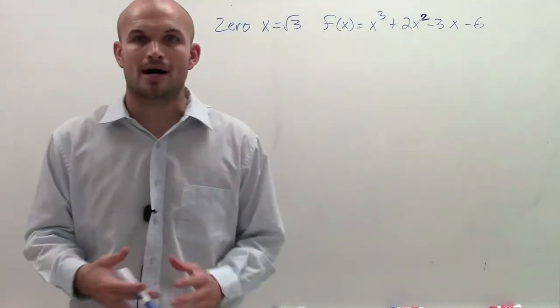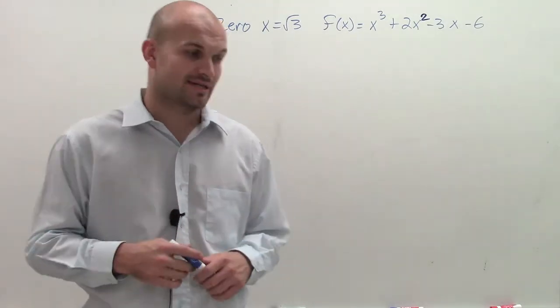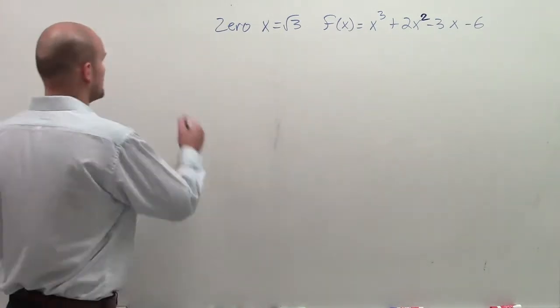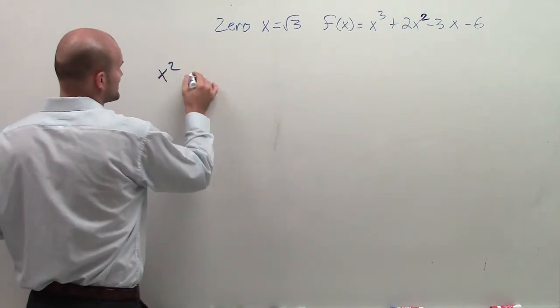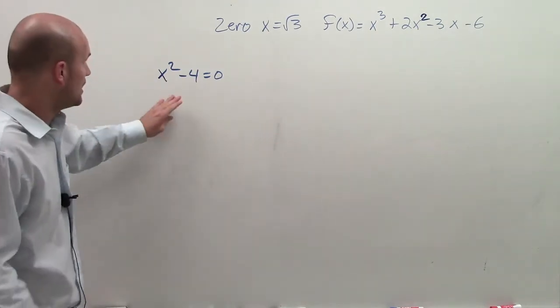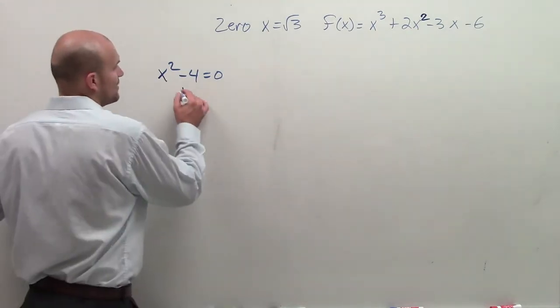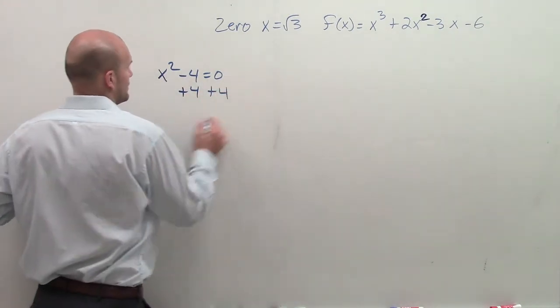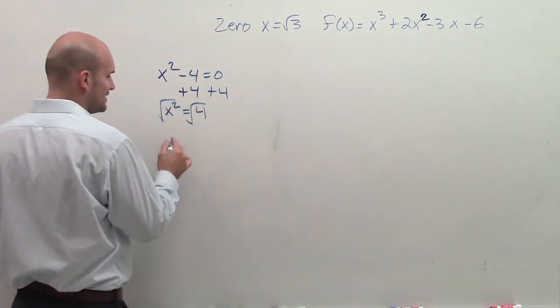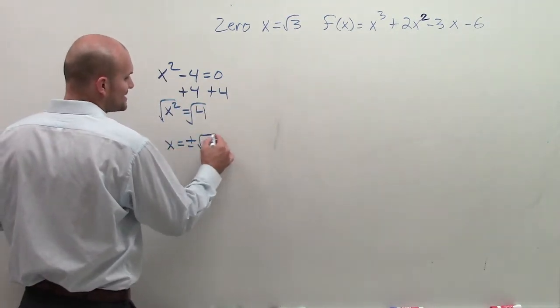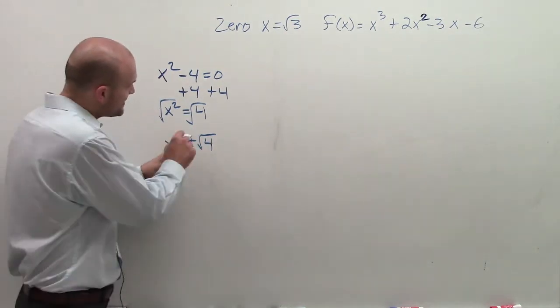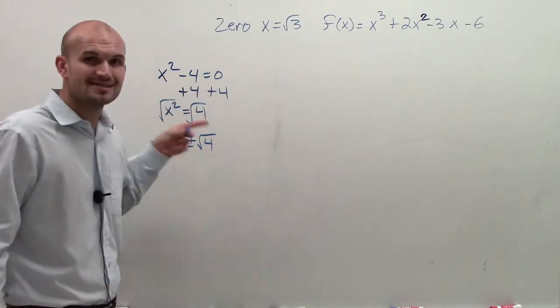To solve this problem, we've got to remember what exactly the zeros are going to tell us. Let me give you a hint to forward on this problem. Let's say I wanted to solve the zeros for this problem right here, something pretty simple. We can use the square root property to solve for this. By adding 4 on both sides, we get x squared equals 4. Then we square root both sides and get x equals plus or minus the square root of 4, which we know is 2.